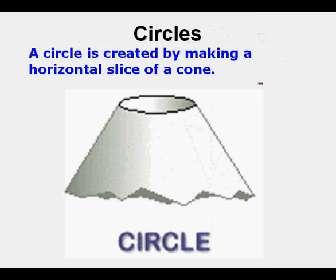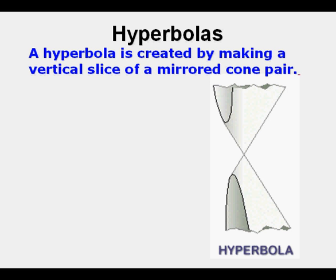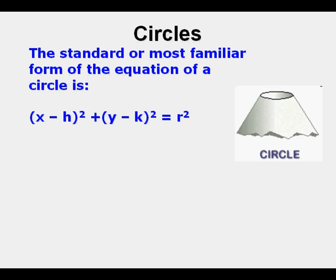A circle is created by making a horizontal slice of a cone. An ellipse is created by making an oblique slice of a cone. And a hyperbola is created by making a vertical slice of a mirrored cone pair.